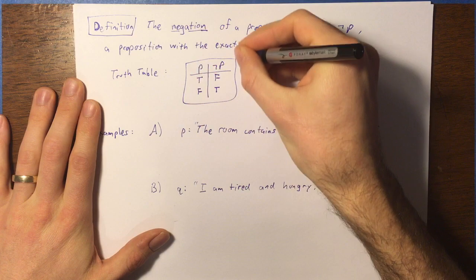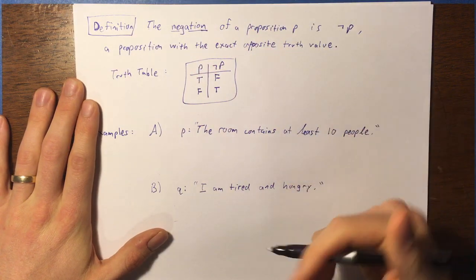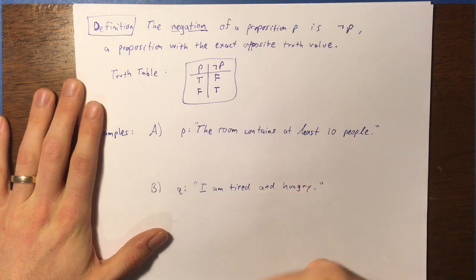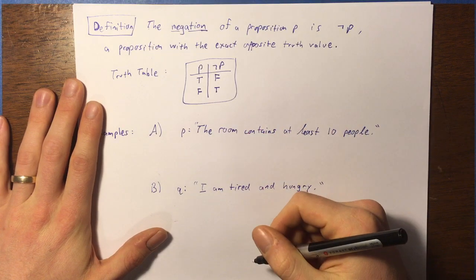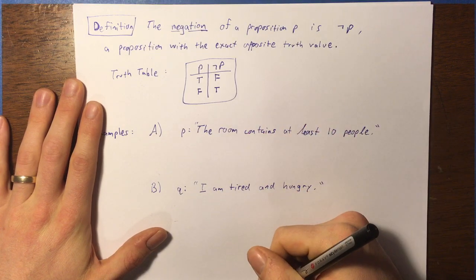So this truth table describes everything you need to know about the operation. That tells us how it works in every possible situation. There's only two situations, inputting true or inputting false. So there we go.